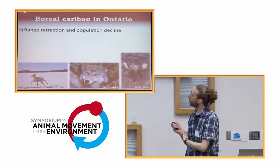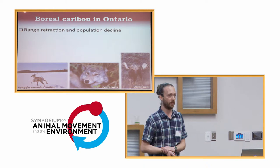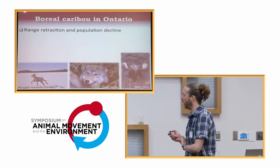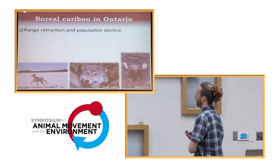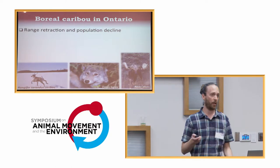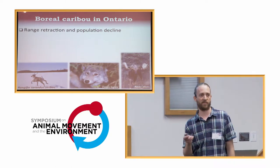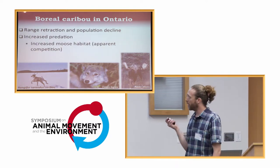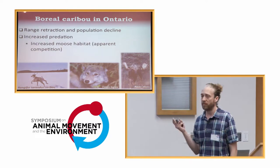So I'm going to start with the ecology of the system. We're dealing with the boreal ecotype of woodland caribou. This subspecies has been experiencing range retraction, population decline, at least in Ontario, but it's threatened throughout its range in North America. And the leading hypothesis for why that is is increased predation.